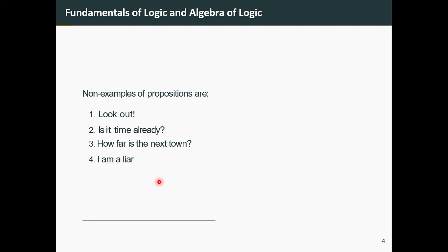Number four: I am a liar. Number five: x + 2 = 11. Now if you look at the first three, these are not declarative statements, and therefore they are not propositions.